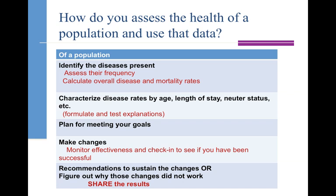Once you start seeing things — our kittens have a higher rate of disease than our adult cats — you can problem solve that. Why are our kittens doing so badly? Then you focus your efforts there instead of ignoring the adult cats, but you concentrate on those areas that are most trouble to you. Then you can make your plans, monitor success with your goal setting, and share it with everybody in the shelter. People care — they want to be part of helping to keep those animals healthy.